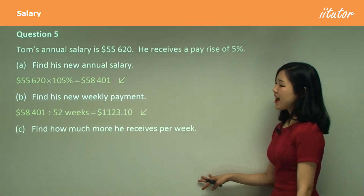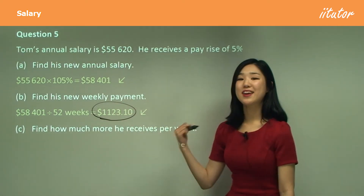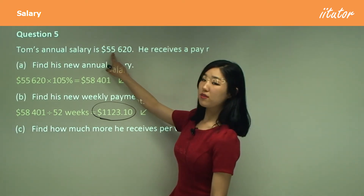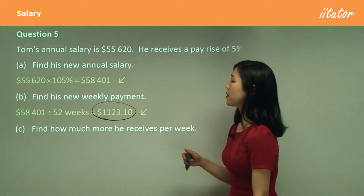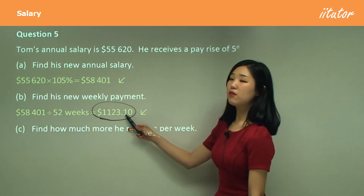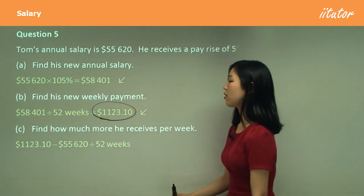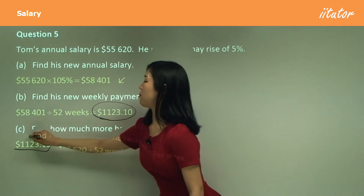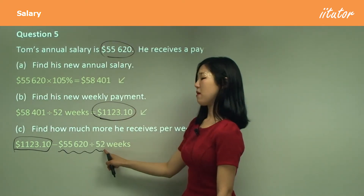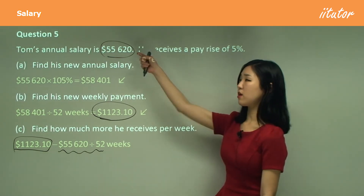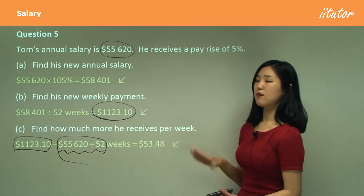And then find how much more he receives per week. This is how much he receives per week now. But before, when this was his annual salary, his weekly payment would have been different — a lot less. So what I'm going to do is find the difference between this weekly payment and the weekly payment when he got the old annual salary. This is what we got in part B. And this is simply the old salary divided by 52. So I want to get one week's worth from the old salary, figure this out, and then subtract it from your answer in B. And you should get something like this — please double check.